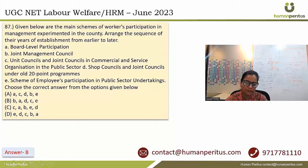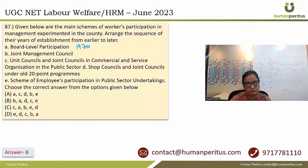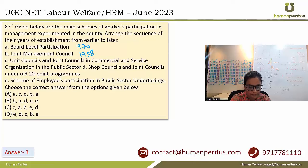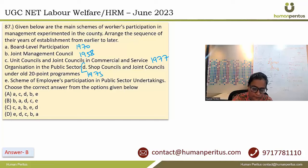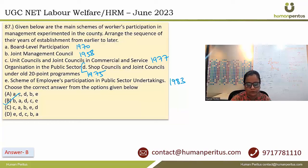The main schemes of workers' participation in management experimented in India must be arranged in sequence from earlier to later. JMCs came in 1958, Board level participation in 1970, Shop councils and joint councils in 1975, Unit councils and joint councils in the public sector was option D, and Schemes of employees participation in PSUs came in 1983. After arranging them, option B is the correct answer: B, A, D, C and E.